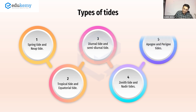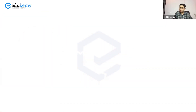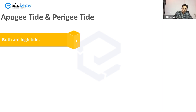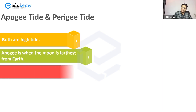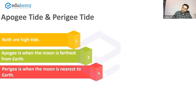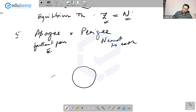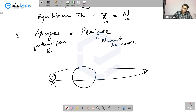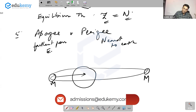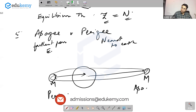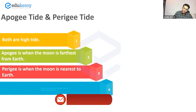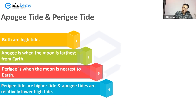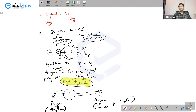The book also mentions apogee tides and perigee tides. Apogee is when the moon is farthest from earth; perigee is when the moon is nearest to earth. The moon's orbit is not exactly symmetrical. Apogee tides and perigee tides are both high tides. Perigee tides are higher and apogee tides are relatively lower high tides. You need to be ready with a quick short note on types of tides.